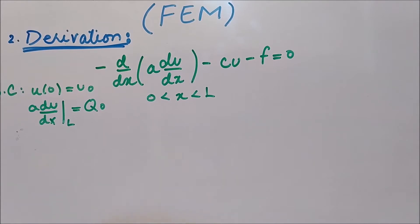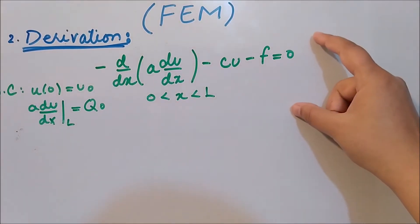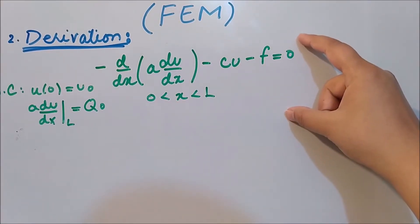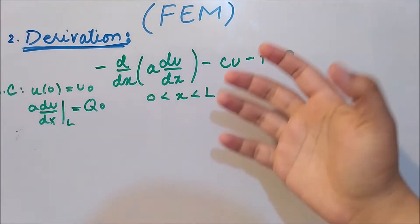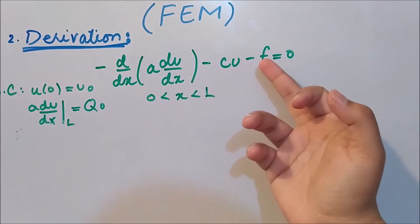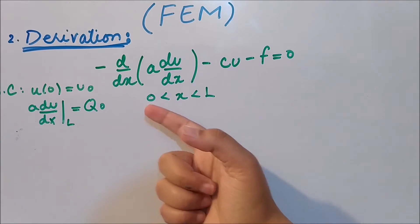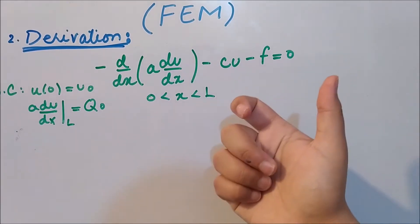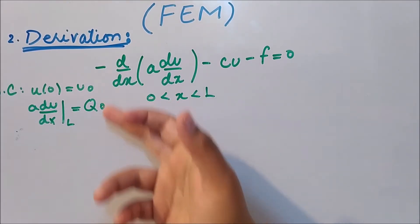Hello everyone, this is Da from eAcademy. In this video we will continue the second step, which is the derivation of the element level equation in the finite element method. In the last video we ended our talk on this versatile differential equation — a general one where I have not specified a, c, and f — and the domain is from zero to L with two boundary conditions.